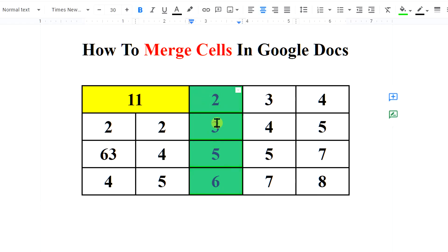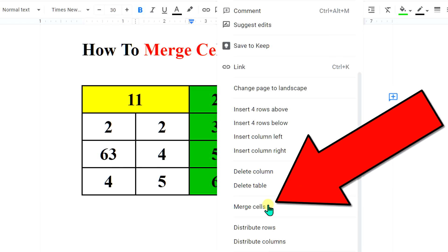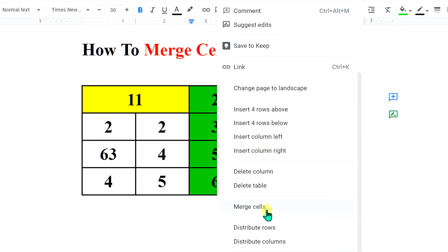To merge table cells vertically, select the vertical cells, right click on the cells and you will see the option merge cells. Click on merge cells to merge all the cells.